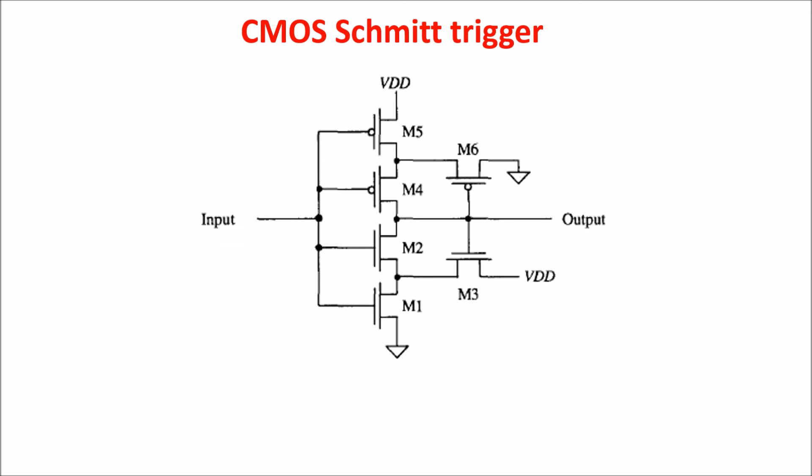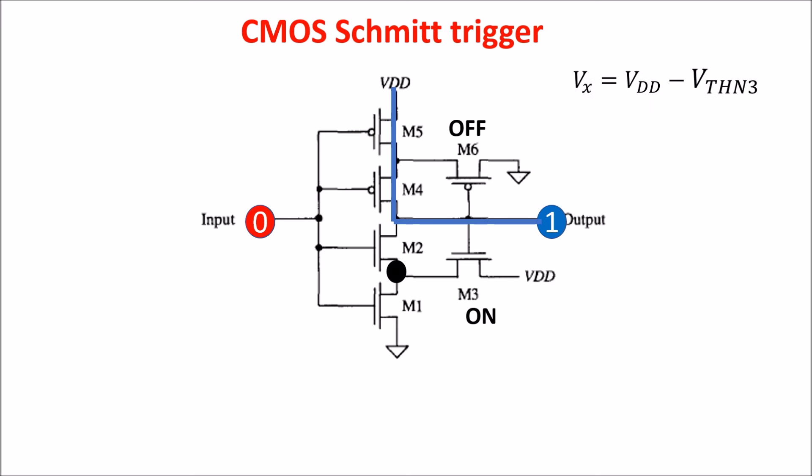Now let's see the working principle of the basic CMOS Schmitt Trigger. You can immediately see the similarity with the inverter schematic. If the input is zero, the output is high because M4 and M5 are on, connecting the output with VDD. If the output is high, M6 is off and M3 is on. The point X is at a voltage VX equal to VDD minus the threshold voltage of M3.